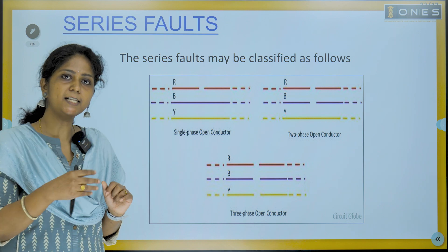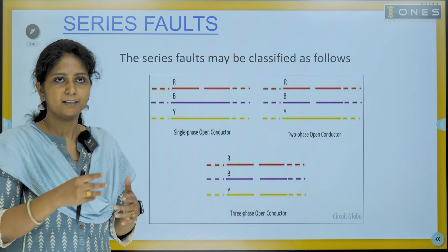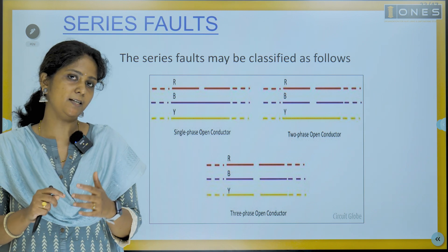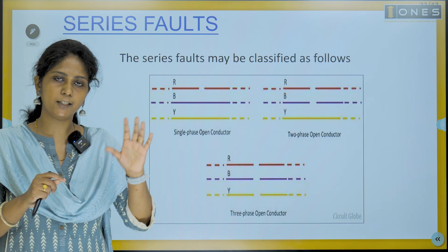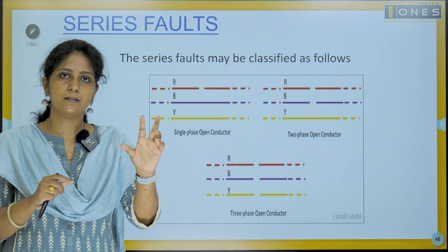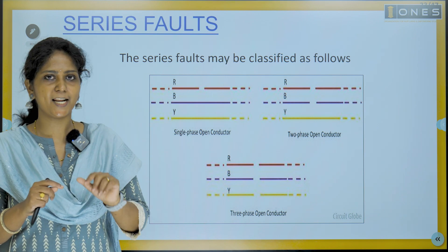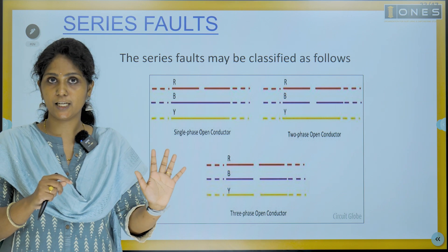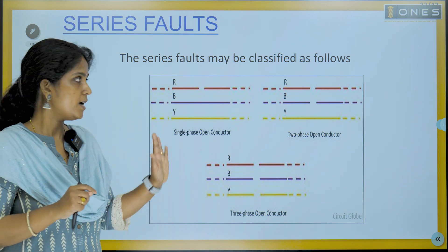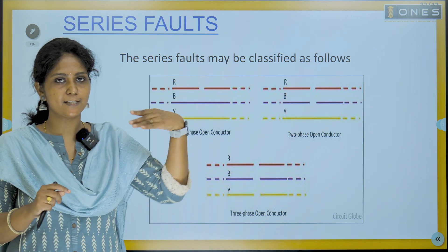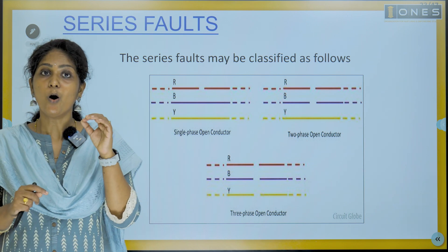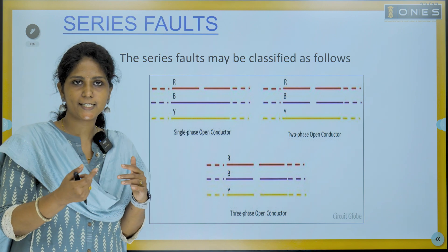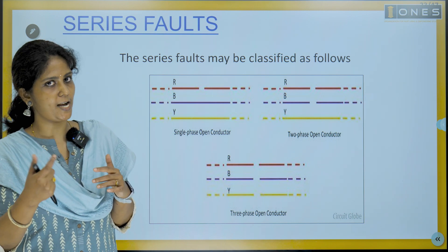Now the other broad classification is the series fault, also called open conductor fault or open circuit fault. There is one conductor open, two conductor open, and three conductor open as the subdivisions. Compared to short circuit faults, the severity of open conductor faults is lesser.